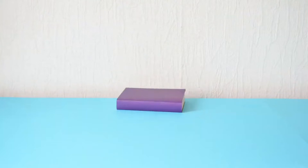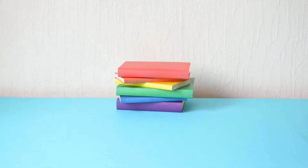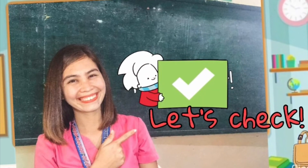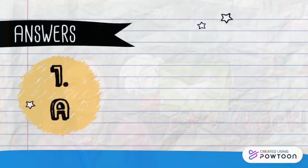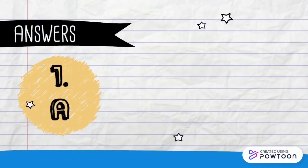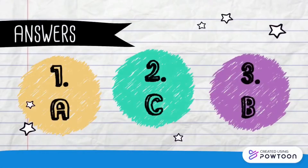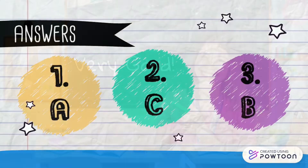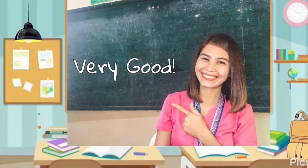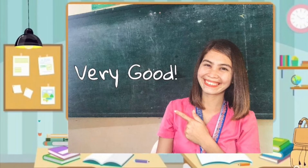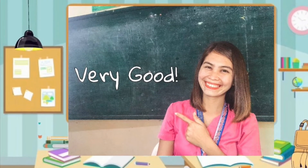Well done! Now let us check your answers. For number 1, we have letter A — Text. Number 2, letter C — PowerPoint slides. And number 3, letter B — Video. Very good! You seem to have an idea about multimedia resources.